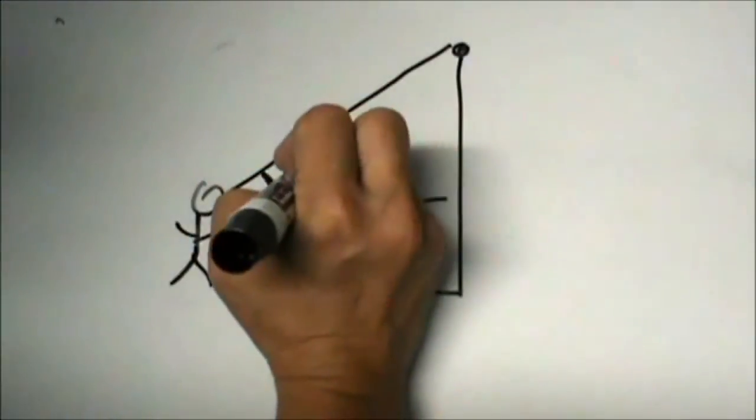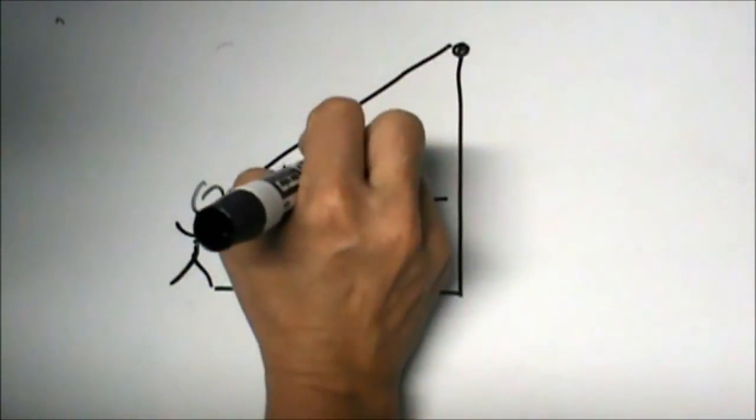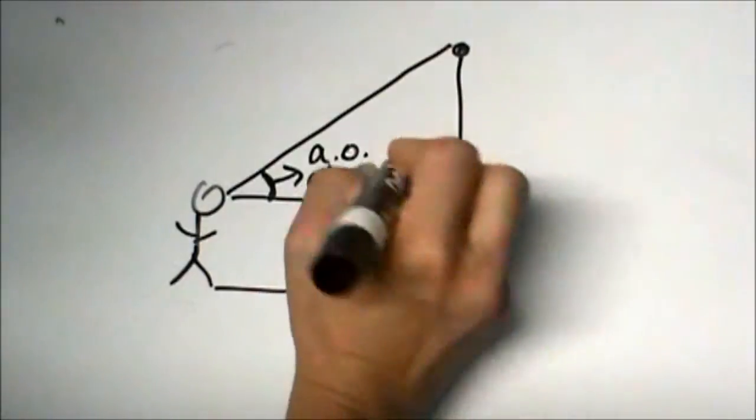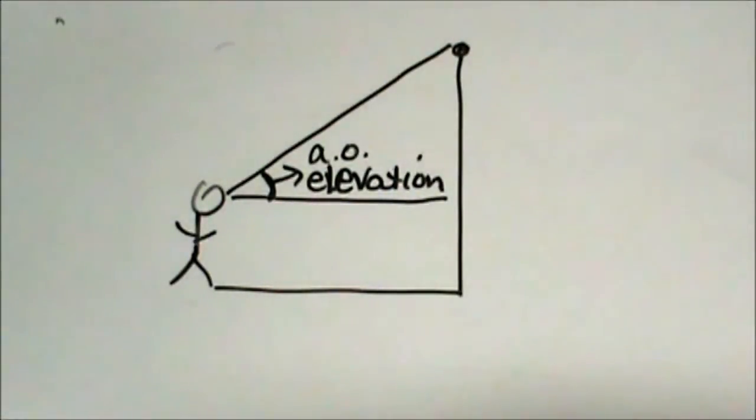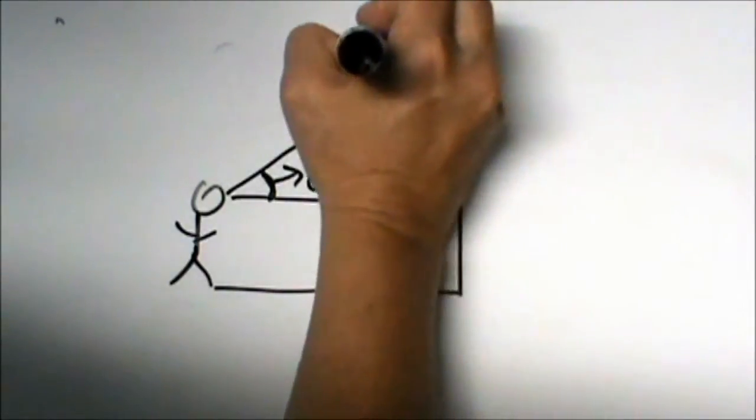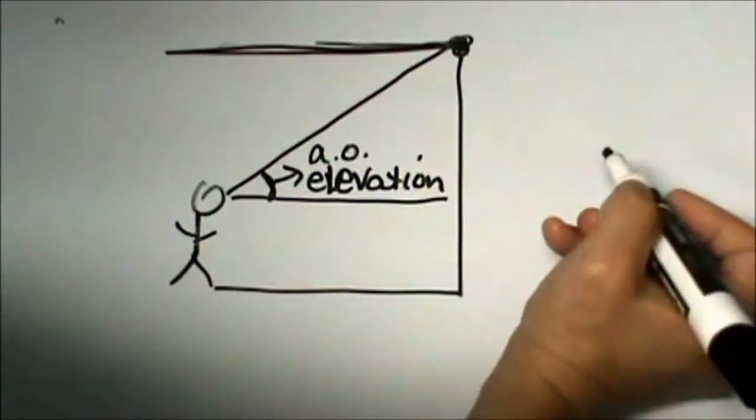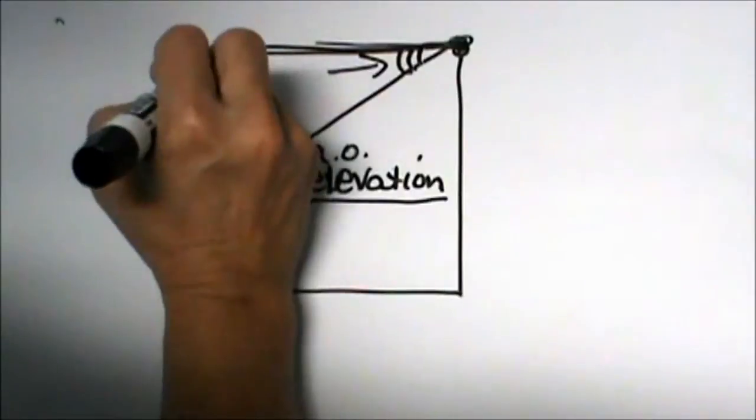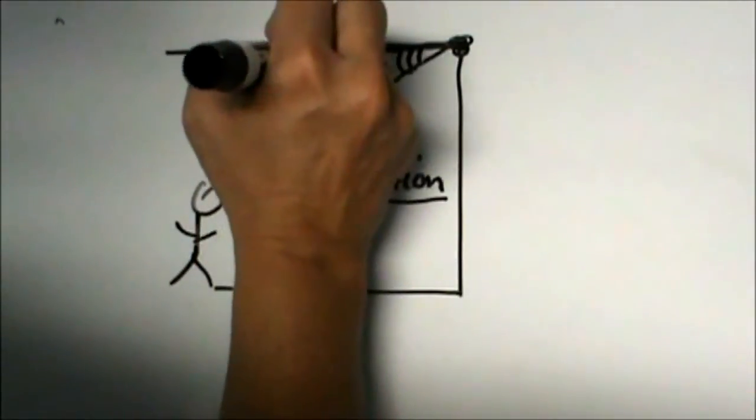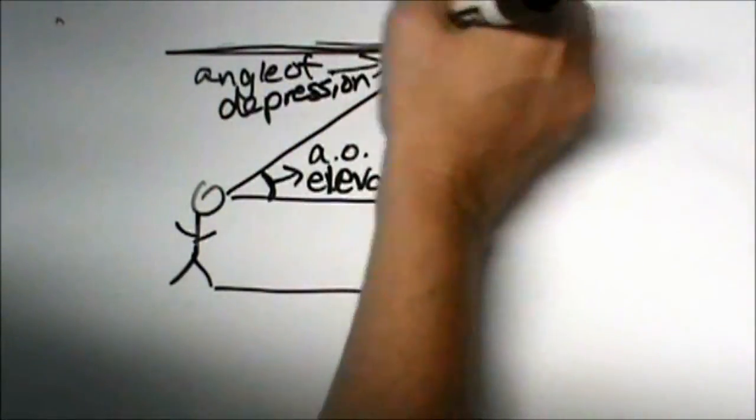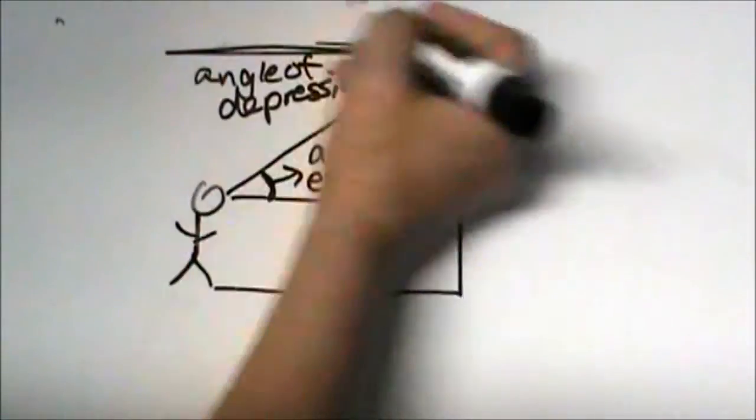So what would be the angle of elevation? Now where would the angle of depression be? Well it is a little deceiving so don't let it deceive you. Let's say you are at the top and you have a horizontal reference. Your angle of depression is actually this angle right here, angle of depression. It is from the horizontal at the top looking down.